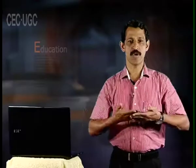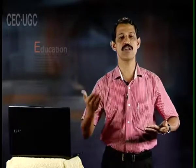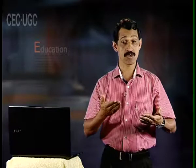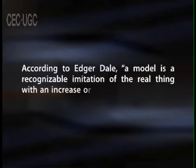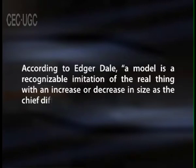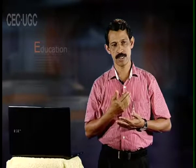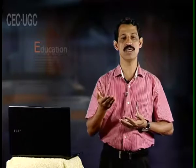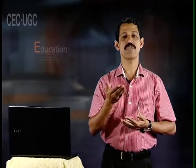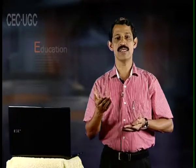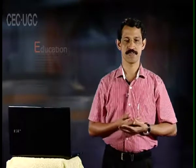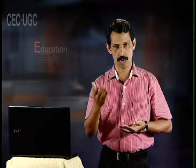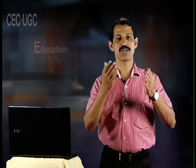A model is usually the miniature structure of the original object — they are replicas or copies of real objects. According to Edgar Dale, a model is a recognizable imitation of the real thing with an increase or decrease in size as the chief difference. Thus, they may be of the same size, or larger or smaller than the thing they represent. They simplify reality and are helpful in creating interest and creative activity among students. Models are generally of three types: solid, cross-sectional and working models.